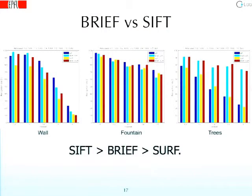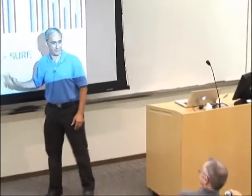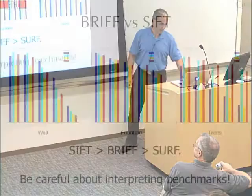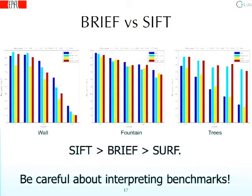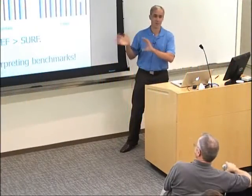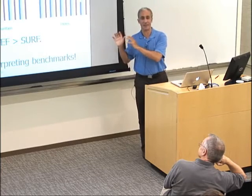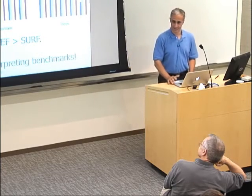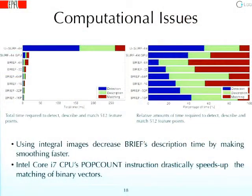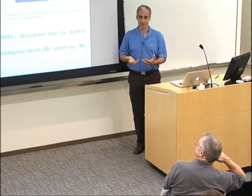SURF is essentially a fast version of SIFT with some loss of performance. On some benchmarks we still do better than SIFT, but not on others — SIFT is still more powerful than BRIEF on some. Roughly, the recognition accuracy of BRIEF is somewhere between SIFT and SURF. But be careful of benchmarks — depending on how you present the graphs, you could argue anything by choosing the right graph to show. The point of BRIEF is not to be more accurate than SIFT; it's to be much faster. And that it is.